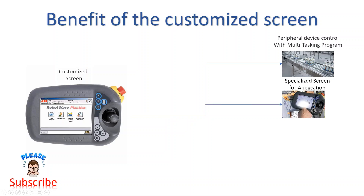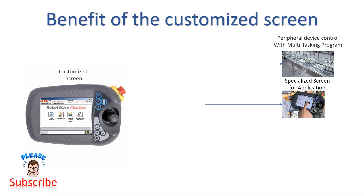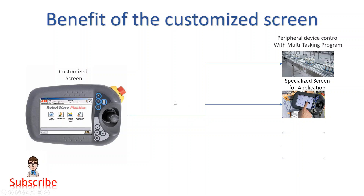Secondly, you can make a specialized screen for a certain application like palletizing, arc welding, or whatever. Just for that application you can add a specialized screen, and then the operator can use it.